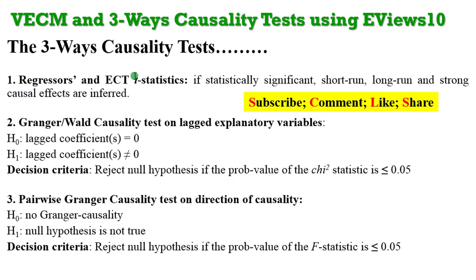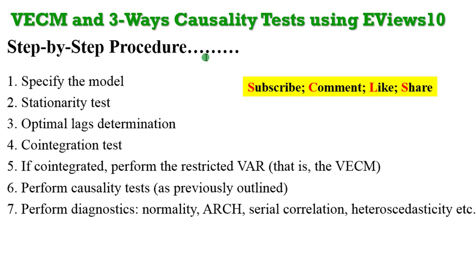As a recap, three ways of testing for causality: the first way is from the outcome of your regression — look out for the significance of the t-statistics, and from there you can infer short-run, long-run, and strong causal effects. You can also check for causality using the Granger causality test on the lagged explanatory variables. The decision criteria is if the chi-square statistic is below 0.05. For the pairwise Granger causality, that shows you the direction of causality, and you reject the null hypothesis if the F-statistic is below 0.05.